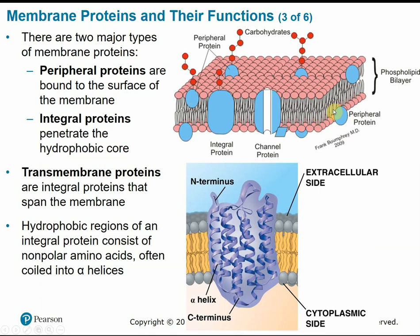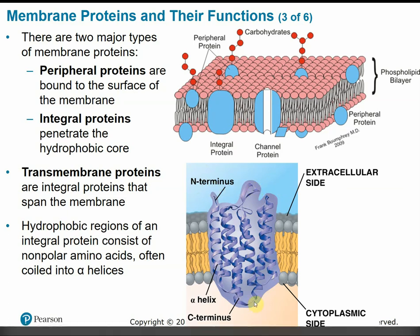Peripheral proteins don't penetrate through the membrane, whereas integral proteins are a more integral part of the membrane structure — they span and penetrate through that hydrophobic core, going through the hydrophobic tail region. Transmembrane proteins are integral proteins that span the entire thickness of the membrane. They have hydrophobic regions in the middle where they pass through the hydrophobic region with nonpolar amino acid helices, and hydrophilic regions on the ends that are exposed to the fluid environment.